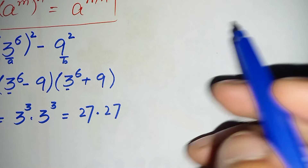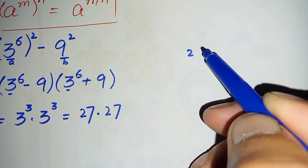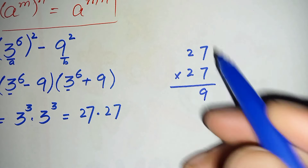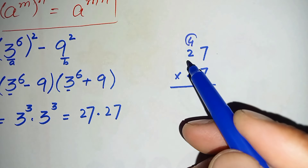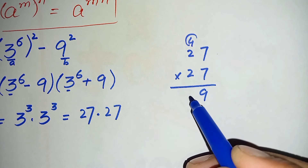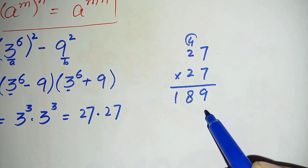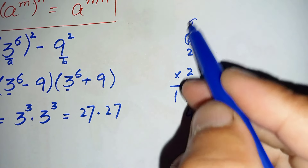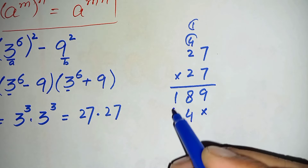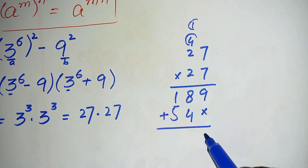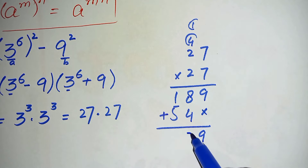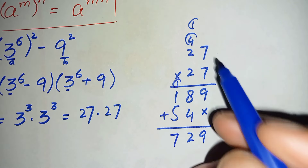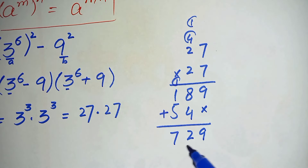We will find the value of 27 times 27 in rough work. 7 times 7 is 49, write 9 carry 4. 7 times 2 is 14, plus 4 is 18, write 8 carry 1. 2 times 7 is 14, write 4 carry 1. 2 times 2 is 4, plus 1 is 5. Adding partial products: 9, then 8 plus 4 is 12, write 2 carry 1, then 1 plus 1 plus 5 is 7. So 27 times 27 is 729.